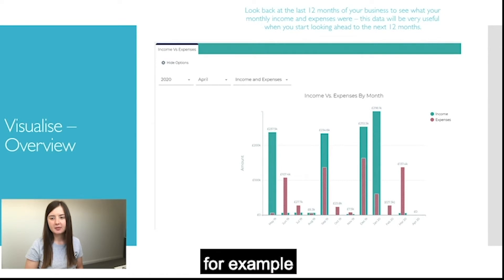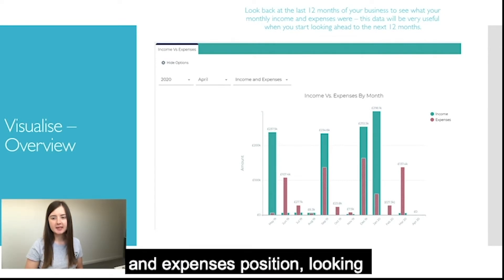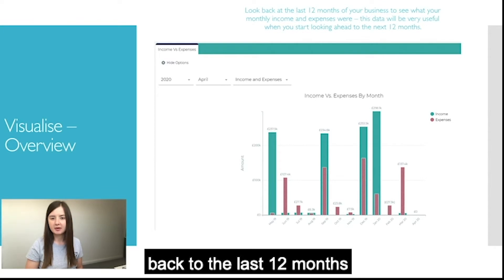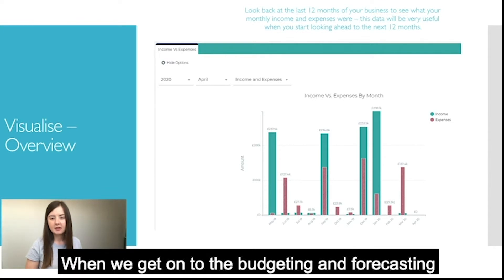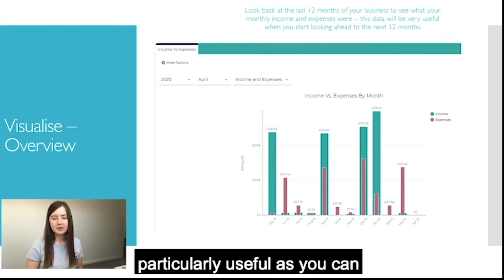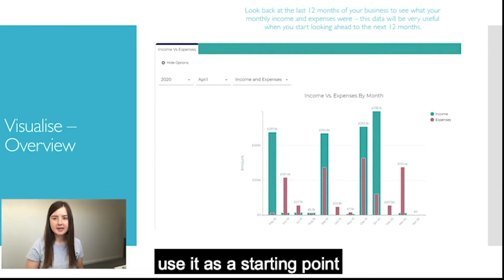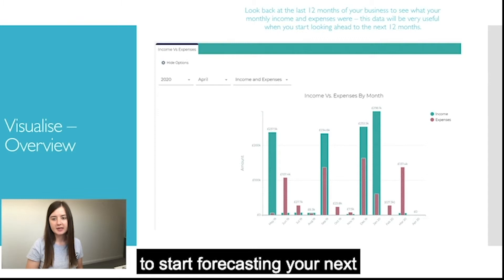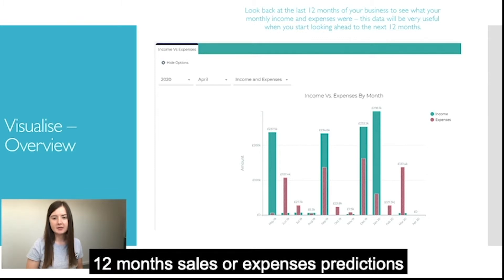For example, the overview tab lets you look at your current income and expenses position looking back to the last 12 months. When we get on to the budgeting and forecasting webinar, this information will be particularly useful as you can use it as a starting point to start forecasting your next 12 months of sales or expenses predictions.